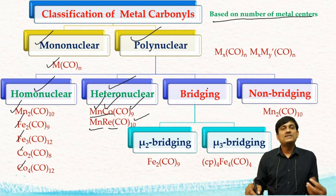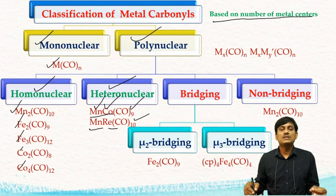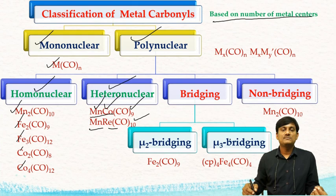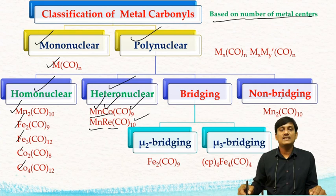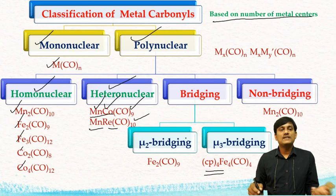Based on bridging ligands, you can classify polynuclear metal carbonyls into bridging and non-bridging polynuclear metal carbonyls. In bridging, there is μ₂ bridging and μ₃ bridging. In μ₂ bridging, the carbon monoxide ligand is shared by two metals. In μ₃ bridging, the CO ligand is connected with three metals. In non-bridging, you have only terminal carbon monoxide ligands. An example of μ₂ bridging is Fe₂(CO)₉, and for μ₃ bridging, Cp₄Fe₄(CO)₄, where Cp means cyclopentadienyl anion. This is the classification of metal carbonyls.